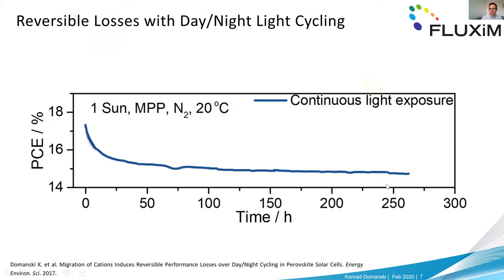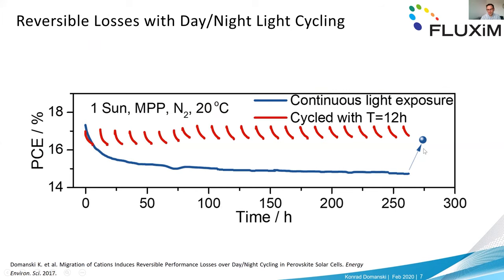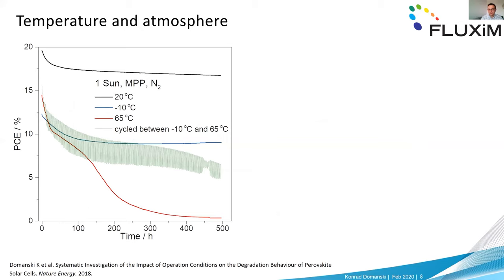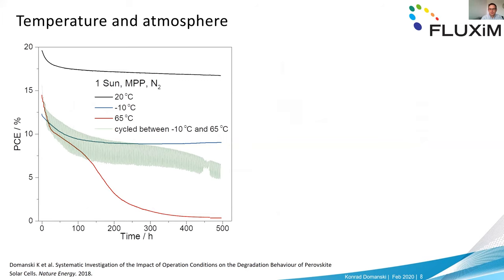All experiments were done on non-encapsulated cells in an inert nitrogen atmosphere. It's not very intuitive how perovskite solar cells will behave: under continuous light exposure they degrade, but if left in the dark the cell recovers part of its lost performance. They behave completely differently when the illumination is cycled. At different temperatures — from minus 10°C on a cold winter morning to 65°C on a sweltering summer afternoon — the cell behaves differently.